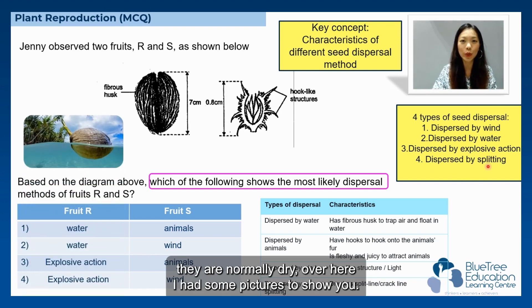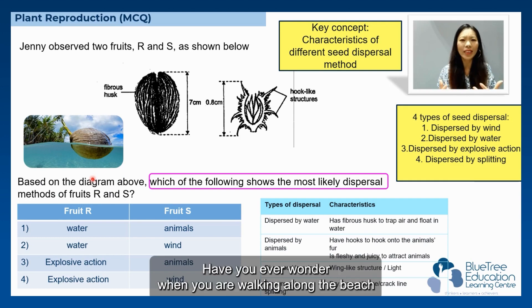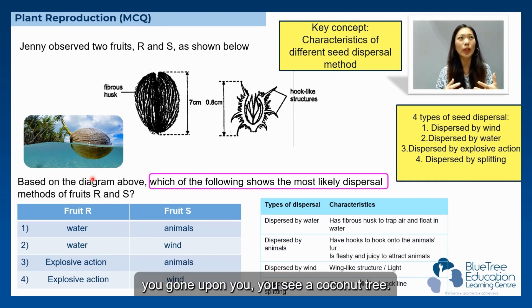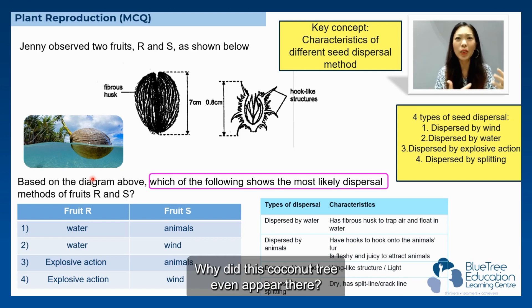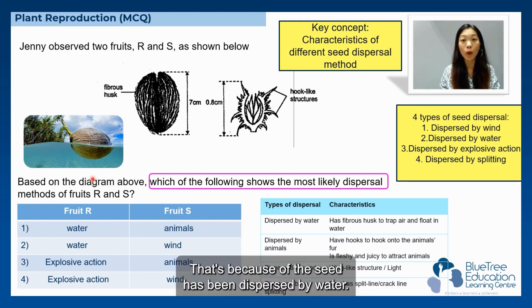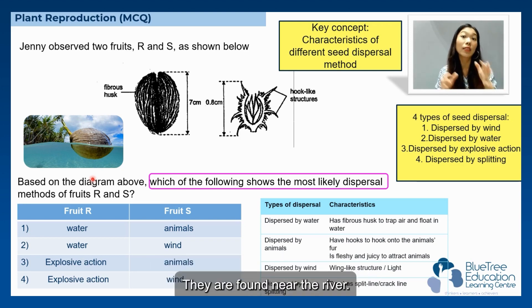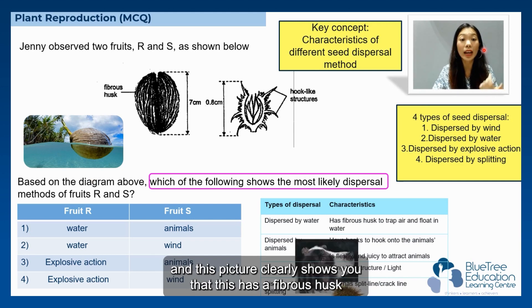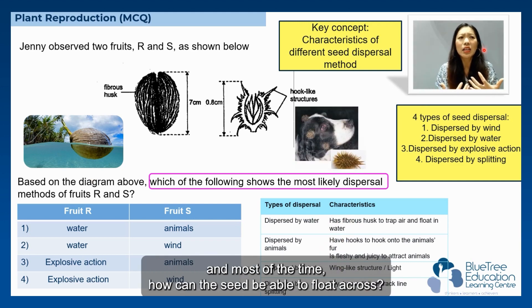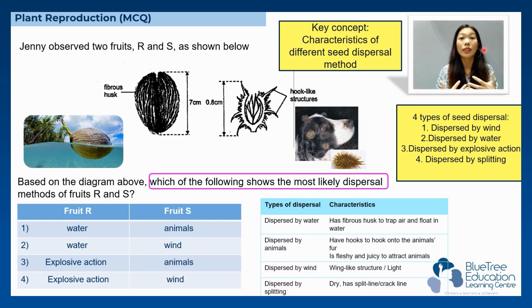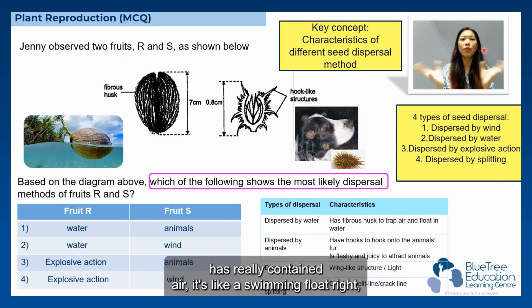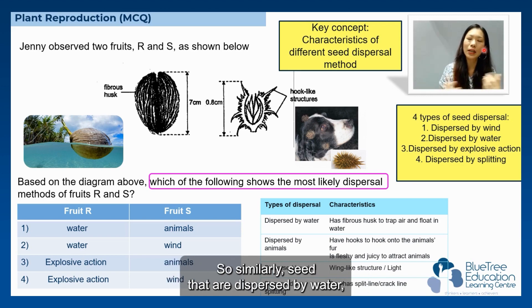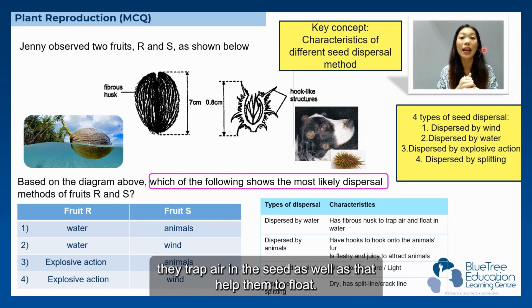I have some pictures to show you. On the left I have a coconut. Have you ever wondered when walking along the beach in Thailand or Malaysia, why a coconut tree appeared there? That's because the seed has been dispersed by water. Seeds dispersed by water are found near rivers and oceans. This picture clearly shows the fibrous husk. Inside the seed it contains trapped air — like your swimming float — which causes it to float in the water. Similarly, seeds dispersed by water have air inside that helps them float.